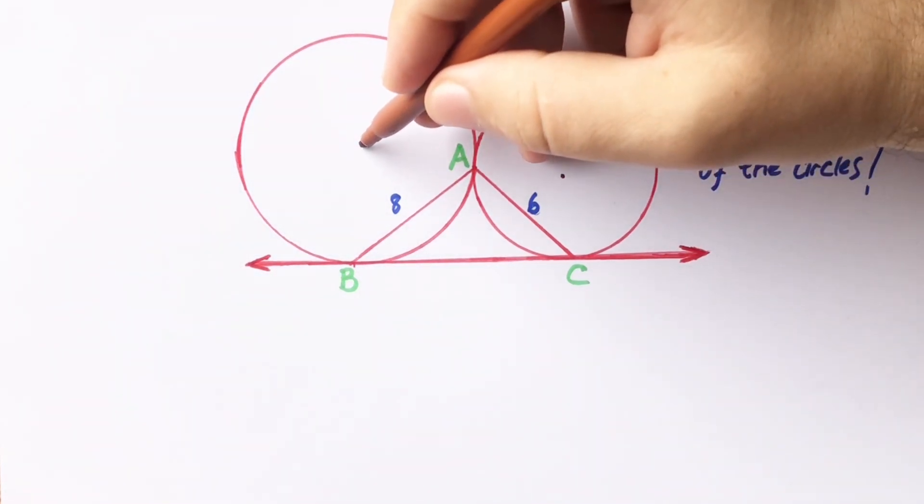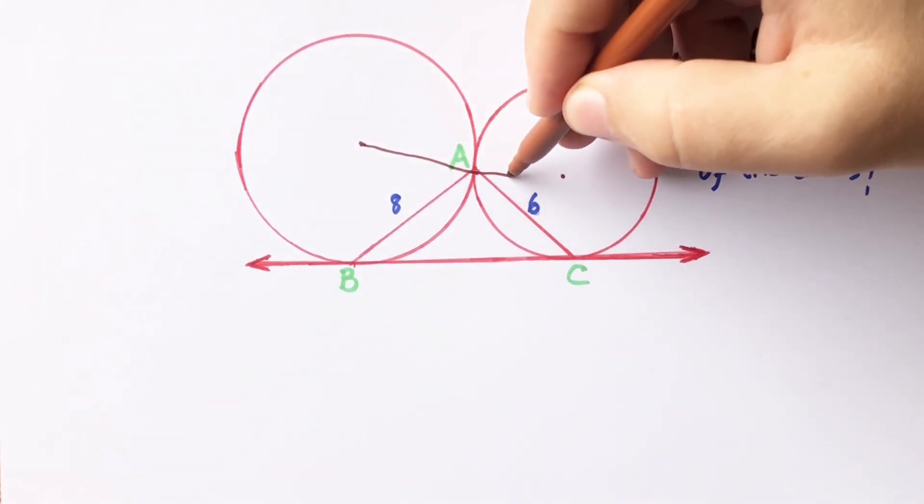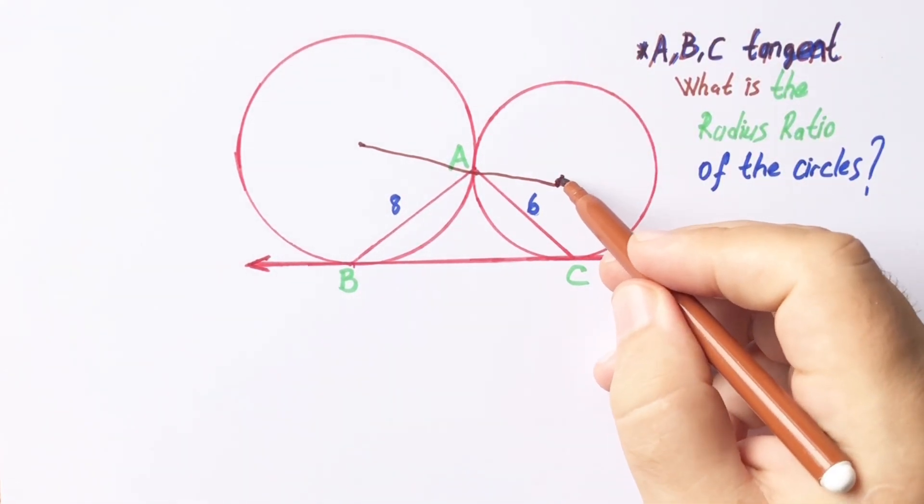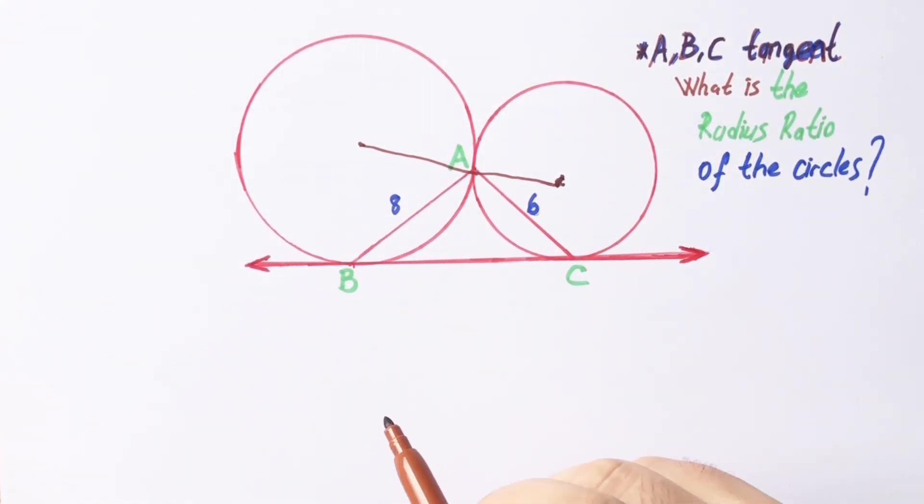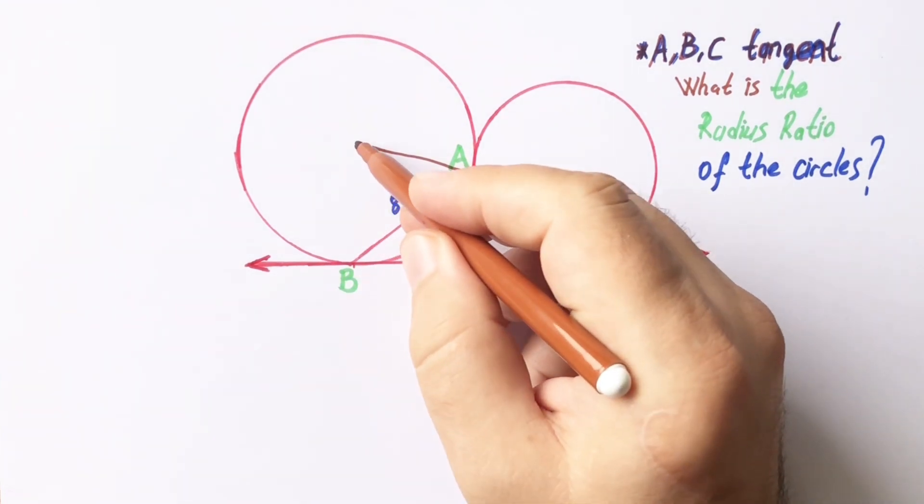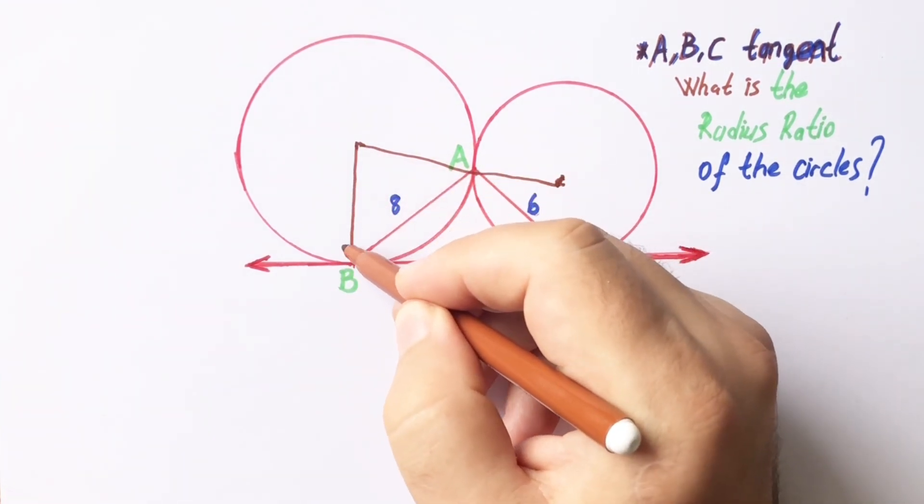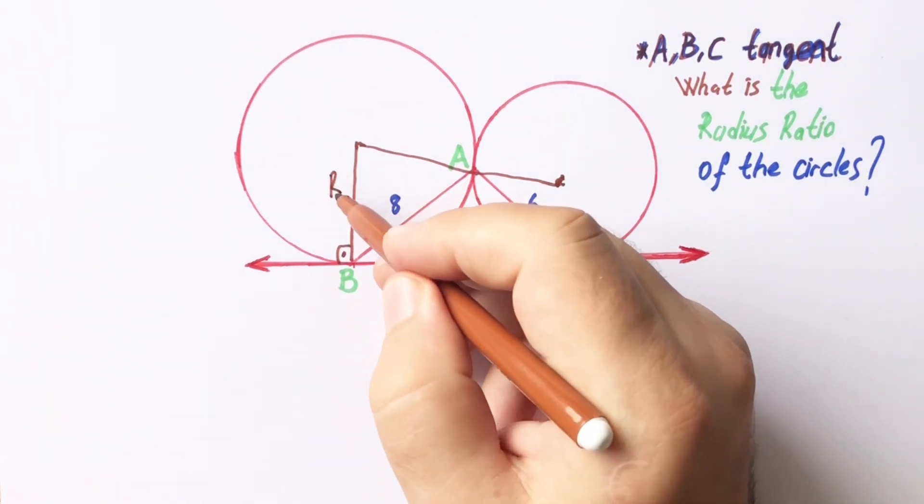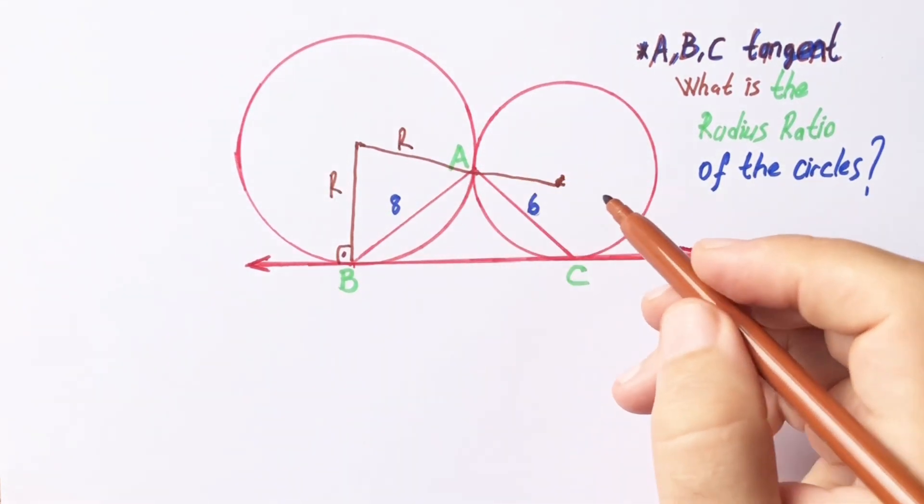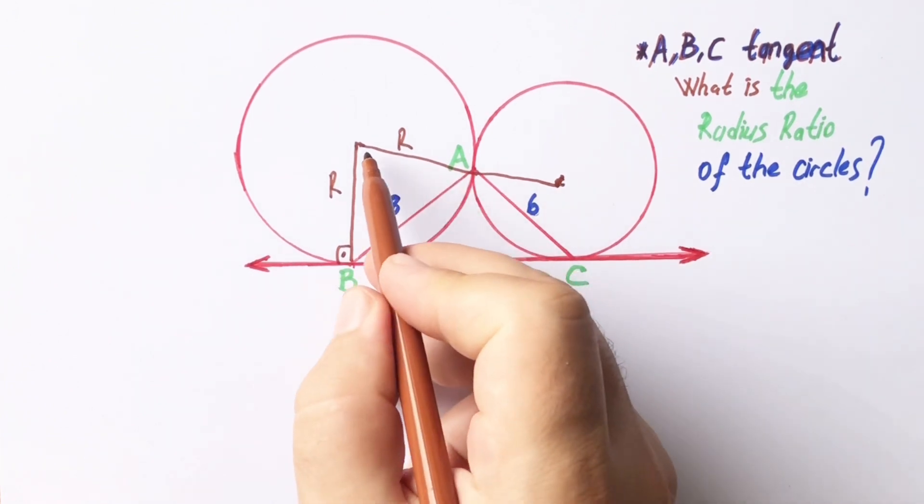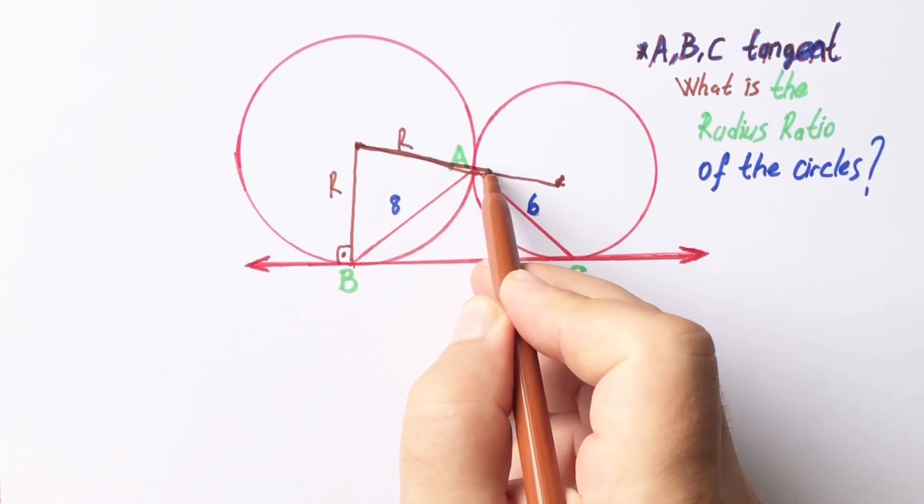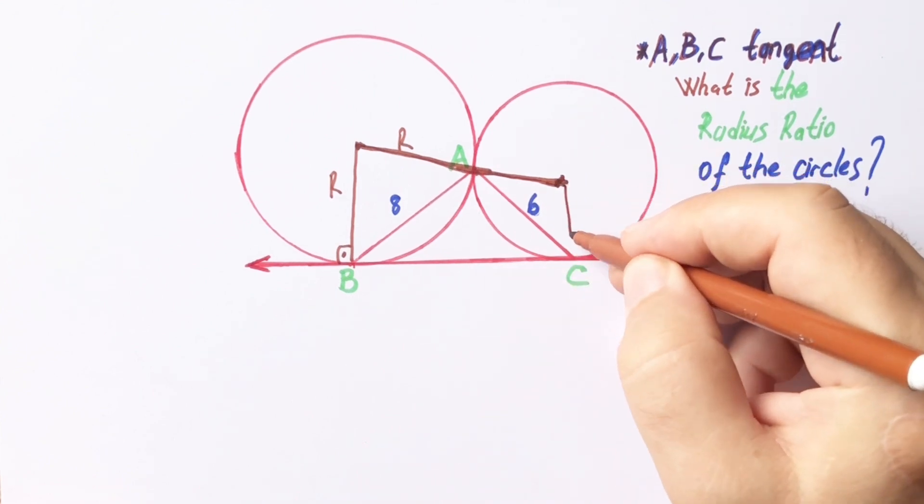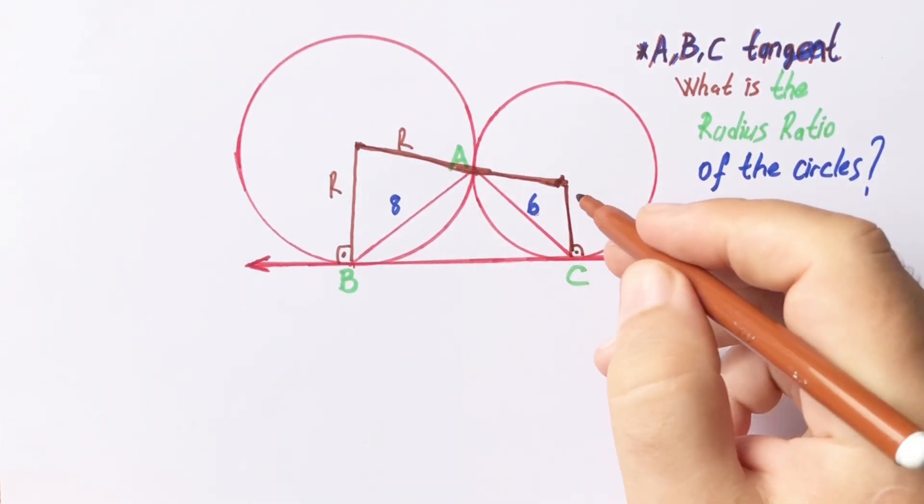If we connect radiuses like this, this line must be linear because of tangent. Let's connect radiuses. Here must be 90 degrees because of tangent. Let's call the radius of the big circle capital R. Let's extend here. This angle must be 90 degrees because of tangent.